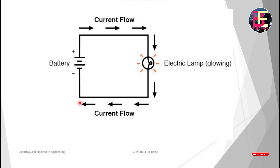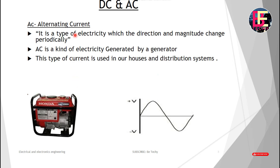Now let's go to AC — alternating current. DC flows in one direction with a constant value or magnitude. AC is the opposite — its magnitude and direction change instantaneously. That is why we call it alternating. AC is produced by a generator. In the AC graph, the voltage value goes to the positive side, then changes direction to the negative side in each half cycle.